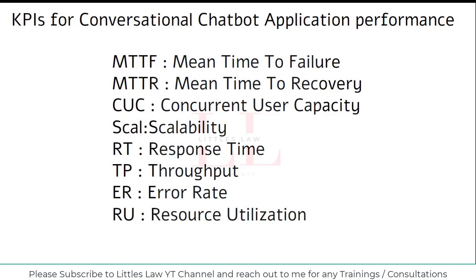Response time indicates the chatbot's speed and efficiency in processing and responding to user queries. Short response times contribute to a better user experience. Next is throughput — measuring the number of transactions or interactions the chatbot can handle within a specified period, typically quantified in transactions per second (TPS) or transactions per minute (TPM). High throughput is important for maintaining performance under heavy load and managing large numbers of interactions effectively.